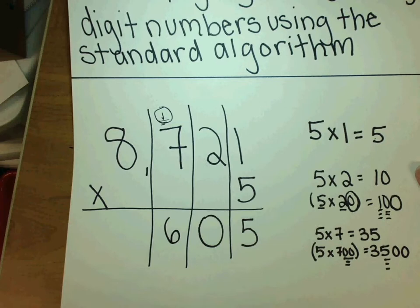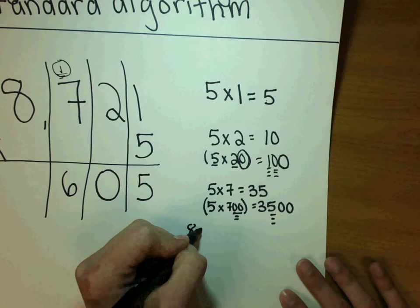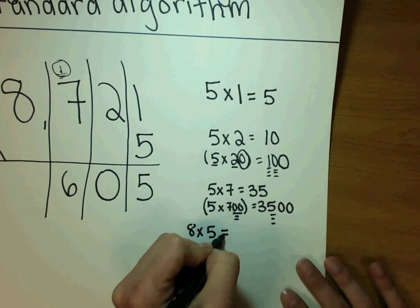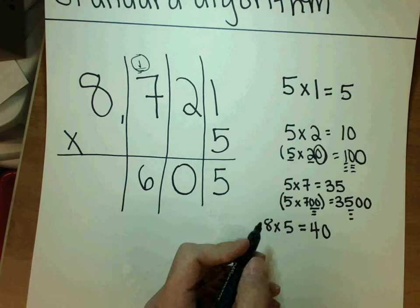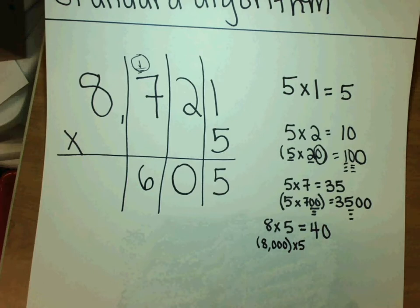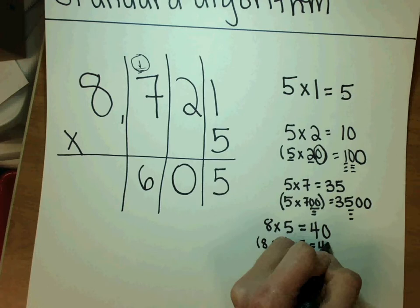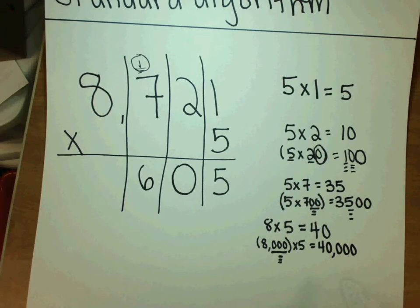Now we multiply the eight times five. Eight times five gives us forty. But this eight isn't just eight — it's eight thousands. So this is really five times eight thousand. We keep that forty and add three zeros at the end — one, two, three — giving us forty thousand. And we have a three in the thousands place from the previous step that needs to be carried over.